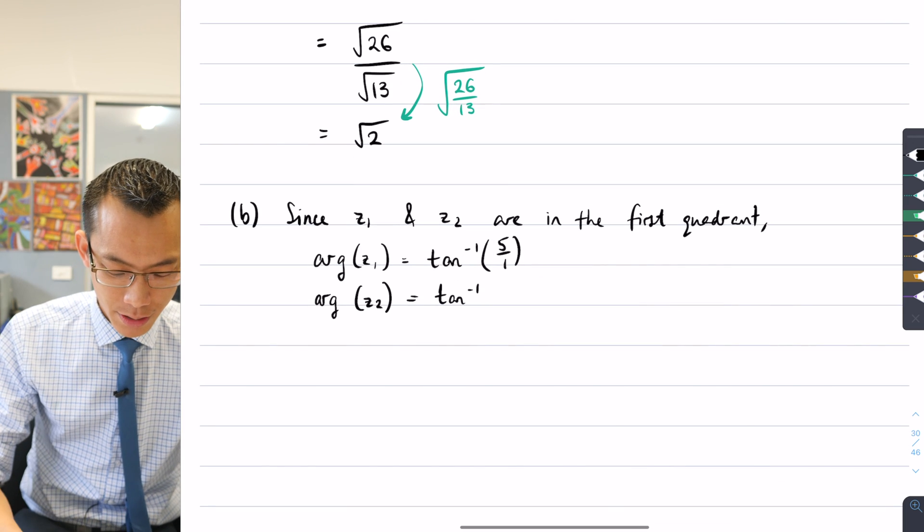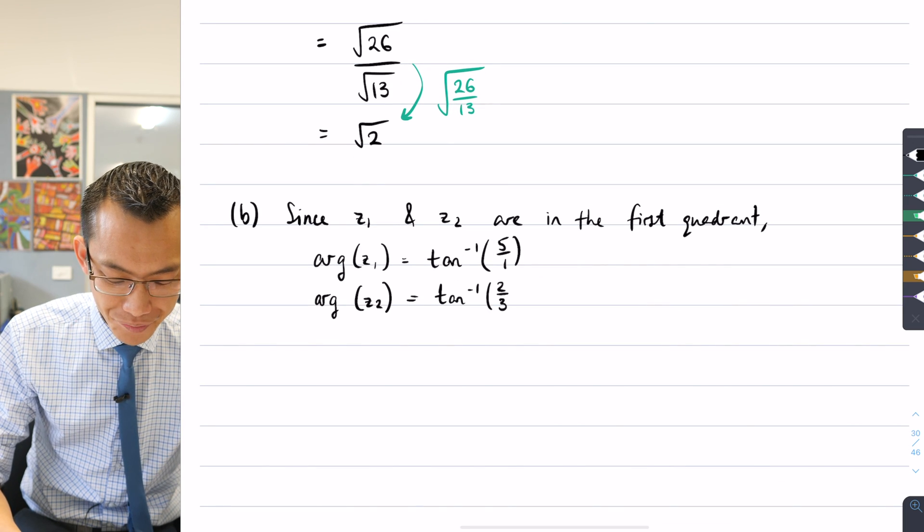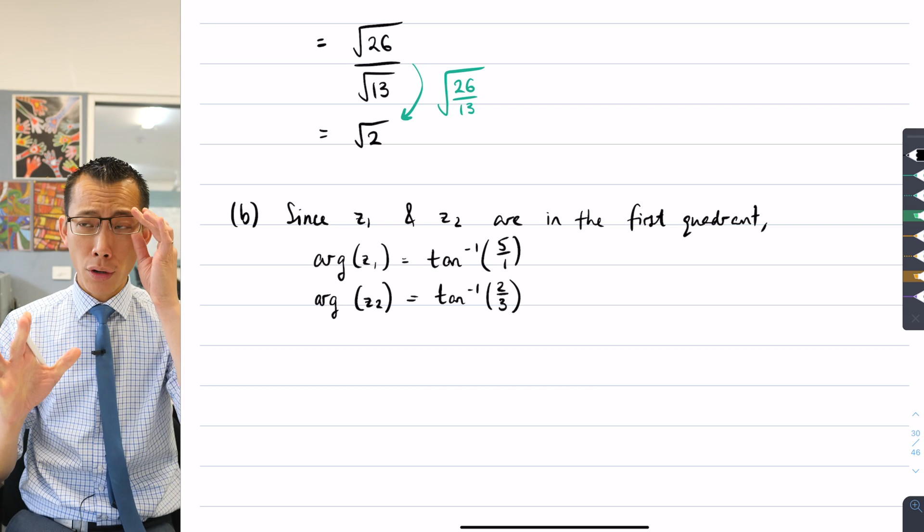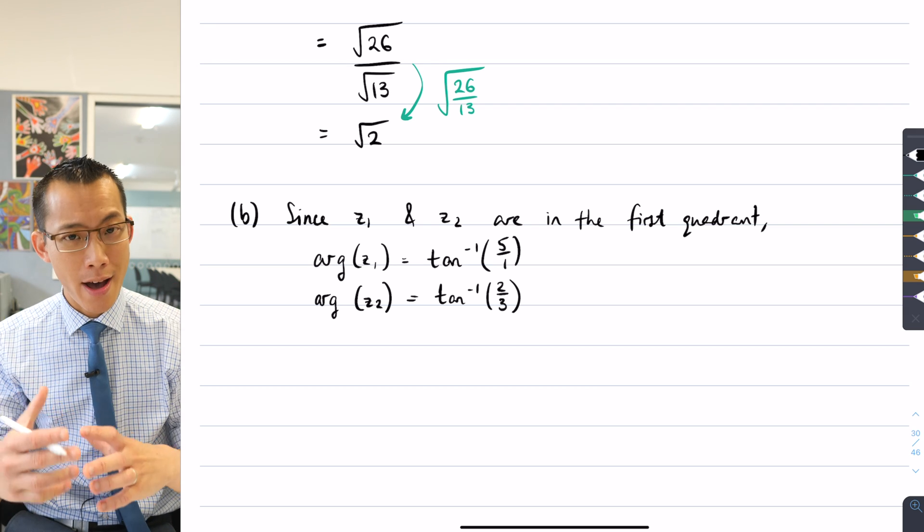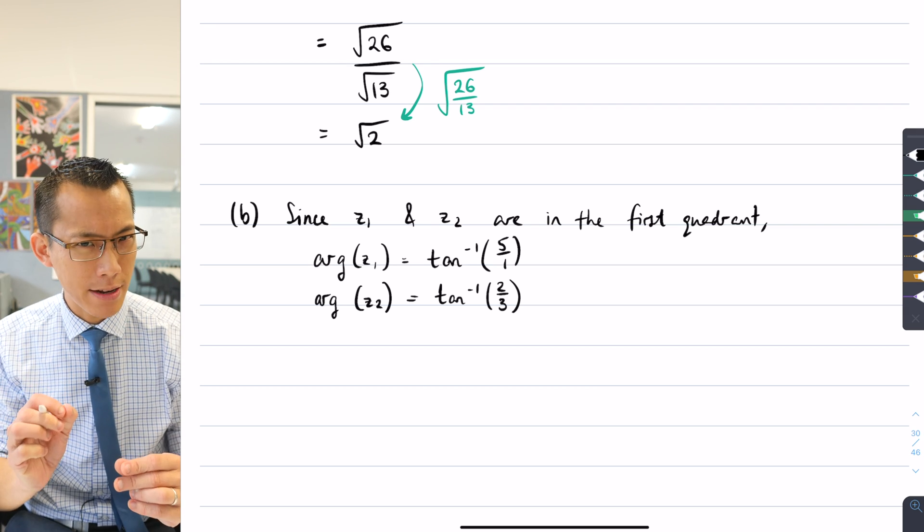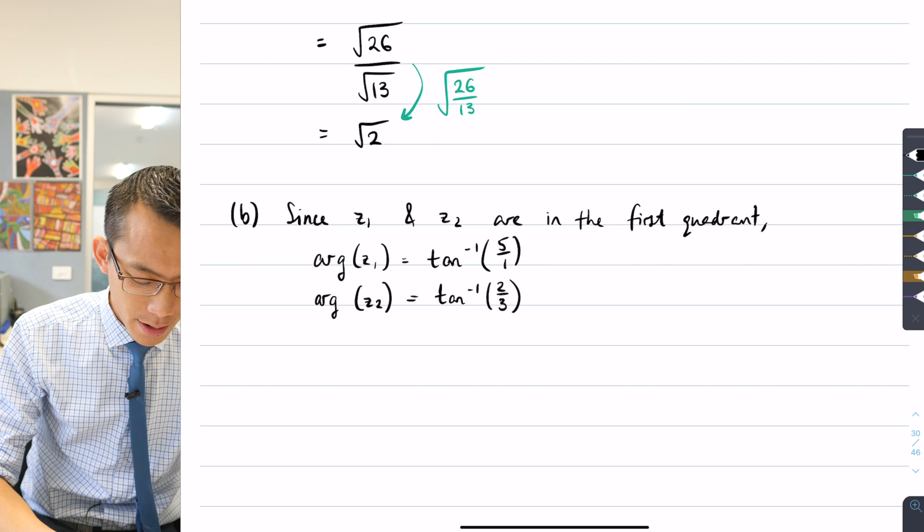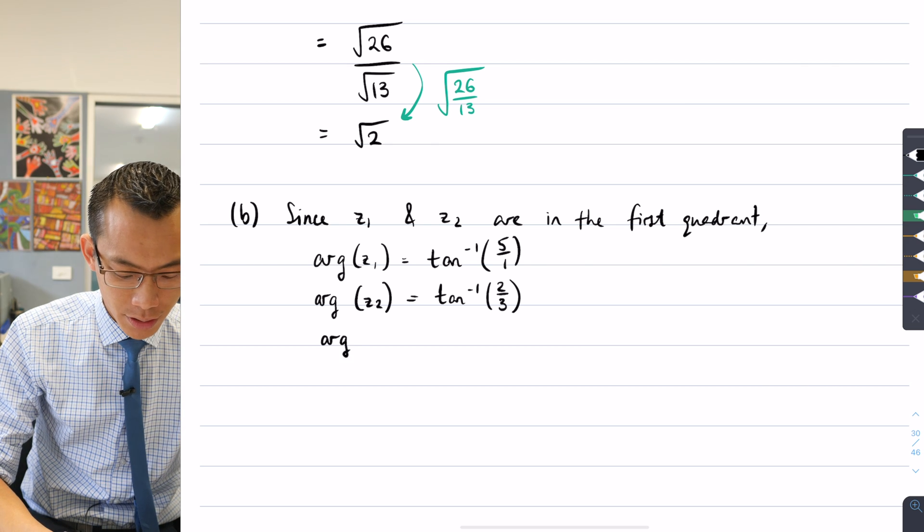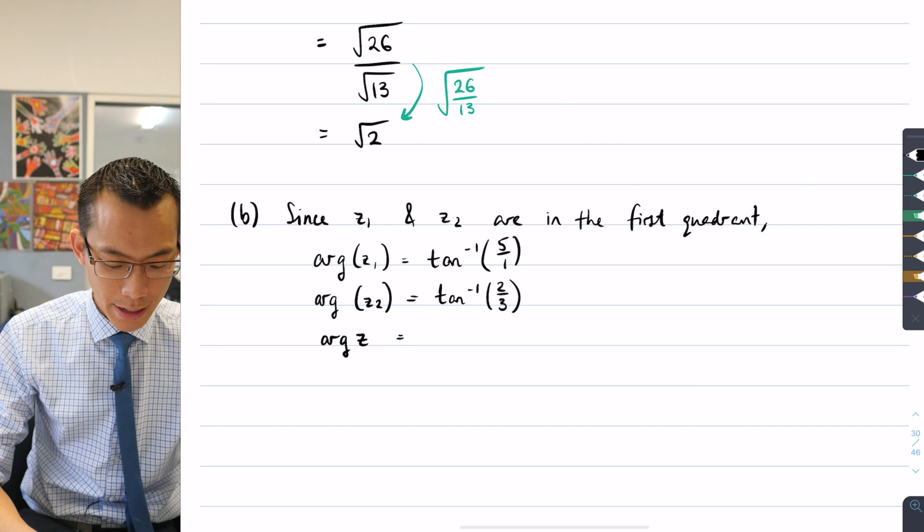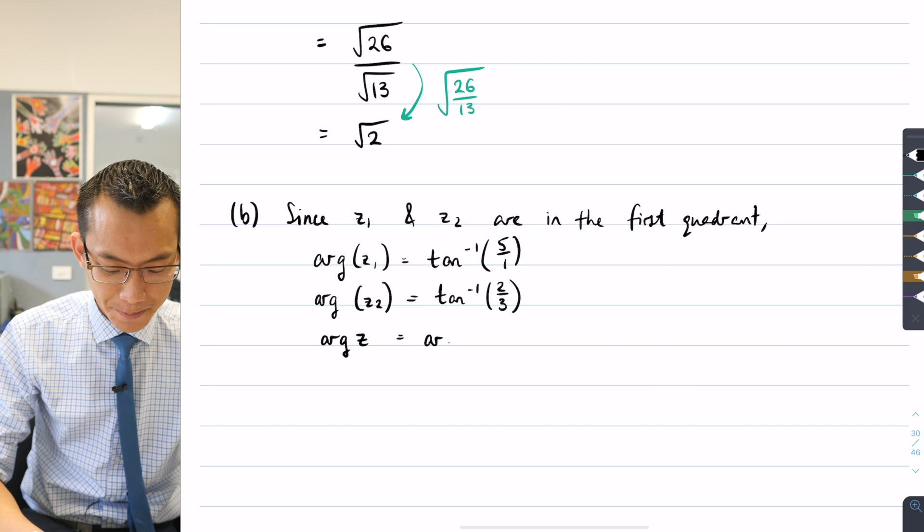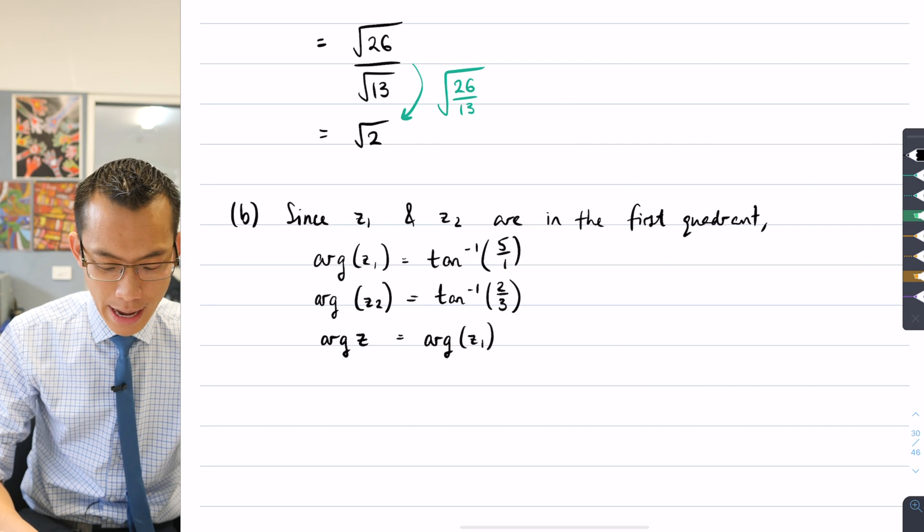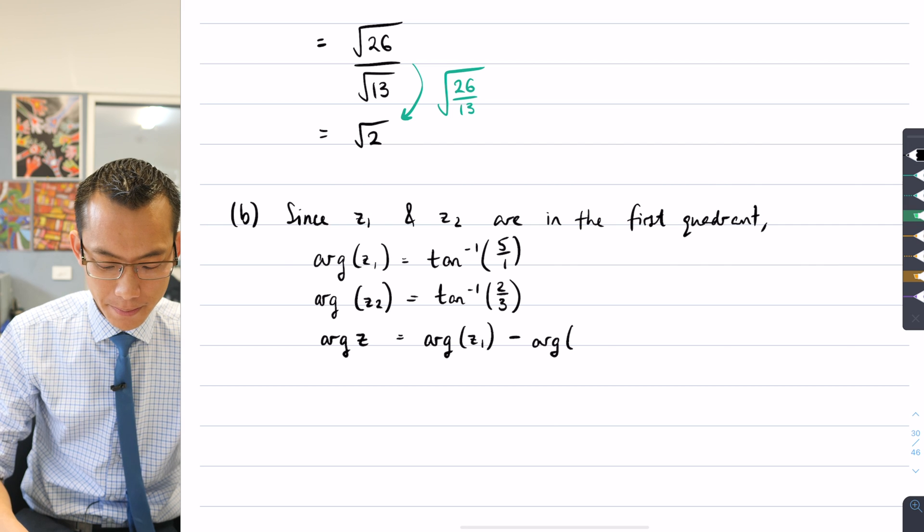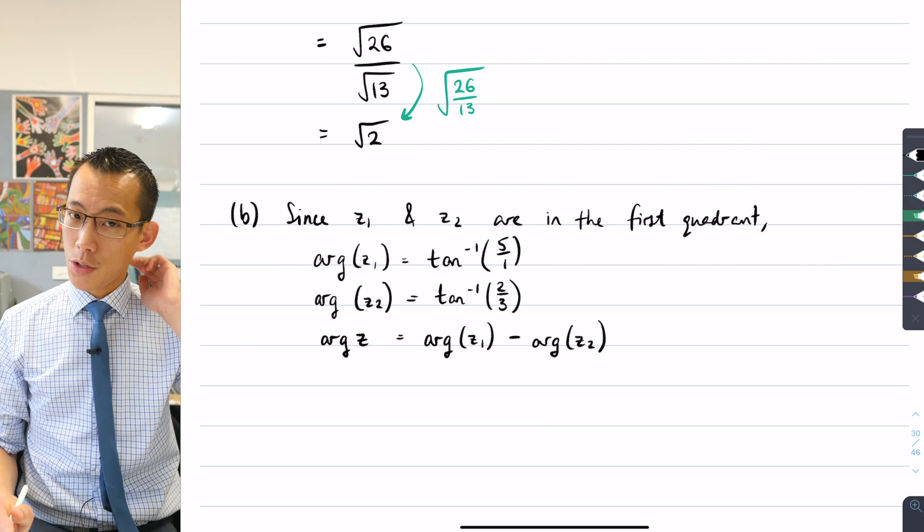Because I've got this fact that when I divide complex numbers I am subtracting the arguments, I can say that the argument of just plain old z is going to be the first argument take away the second argument, like so.